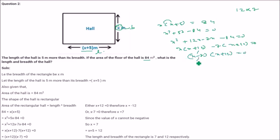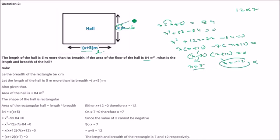From x minus 7 equal to 0 you get x equal to 7. From x plus 12 equal to 0 you get x equal to minus 12. Since x cannot be negative, we discard minus 12. So x is 7, meaning breadth is 7 and length is x plus 5, that is 12.